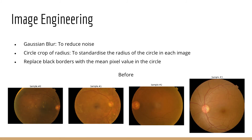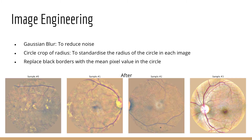Moving on, this is a brief overview of our image engineering. We reduce the noise in the images through Gaussian blur, standardize the radius of the circle in each image, and lastly, replace the black borders in the image by the mean pixel value of the retina.